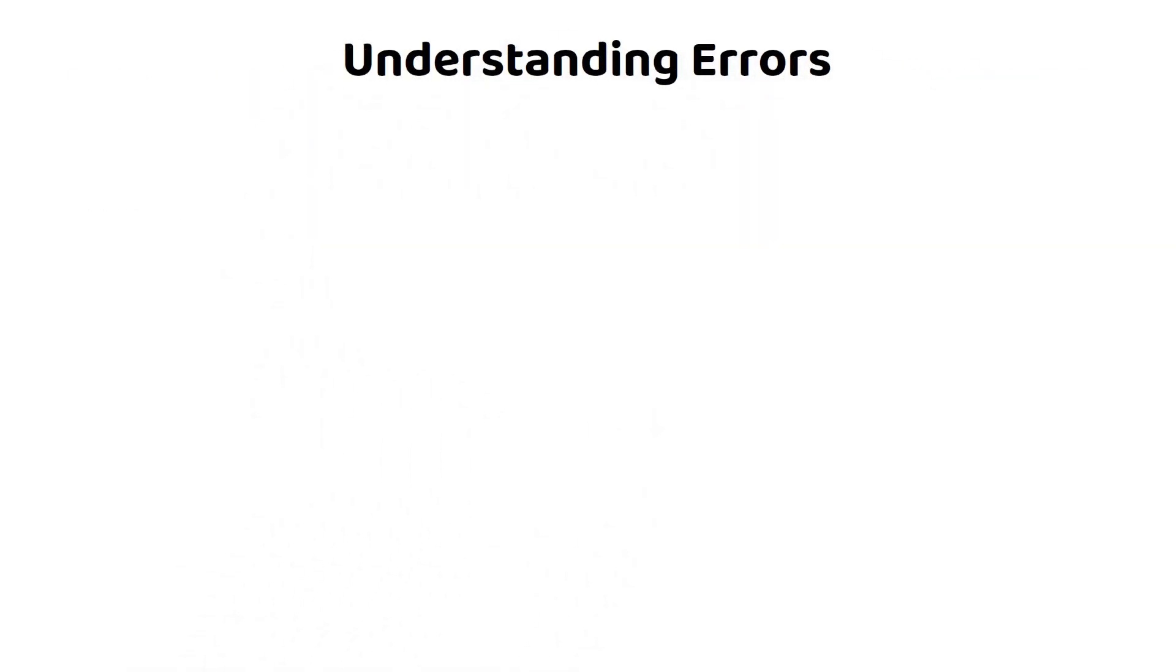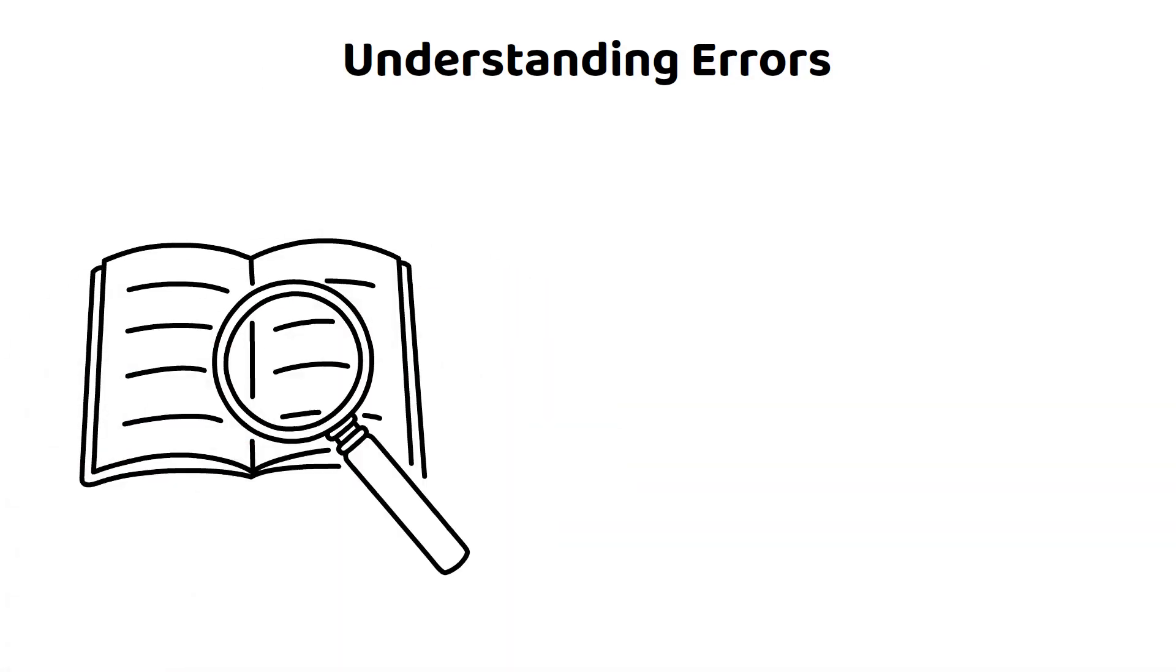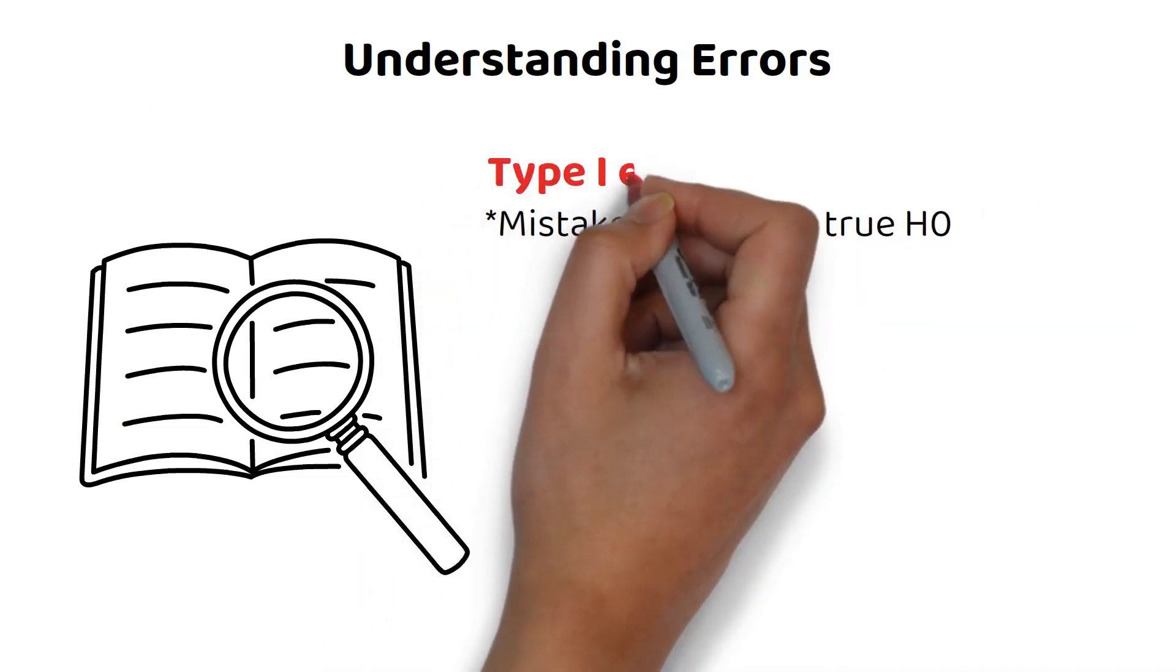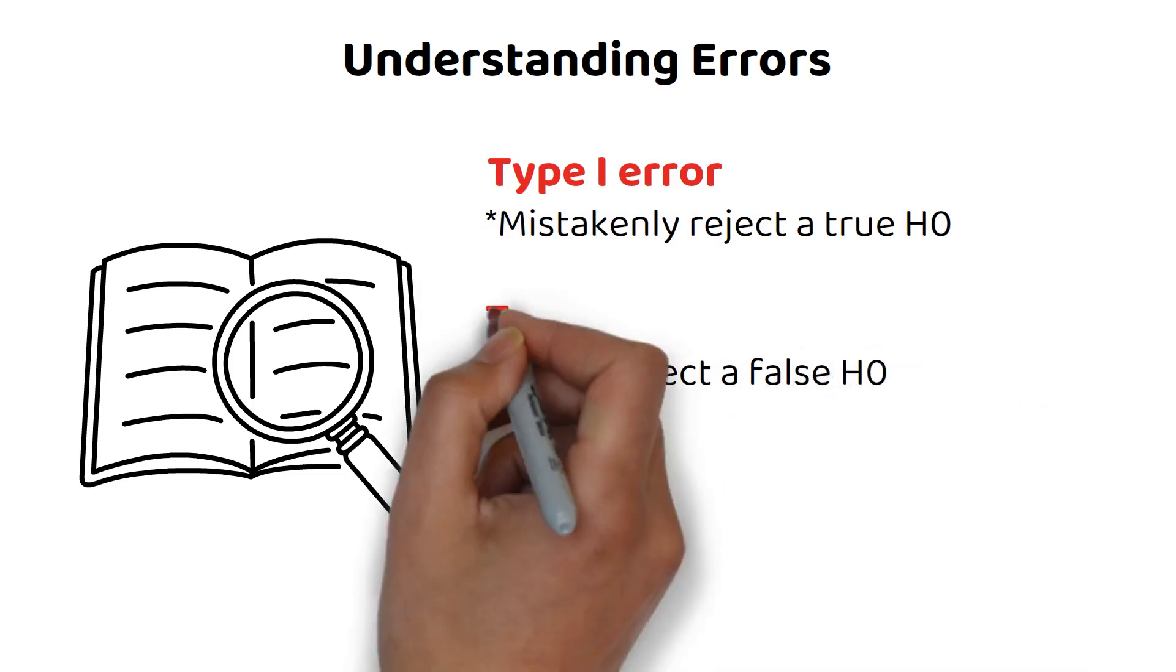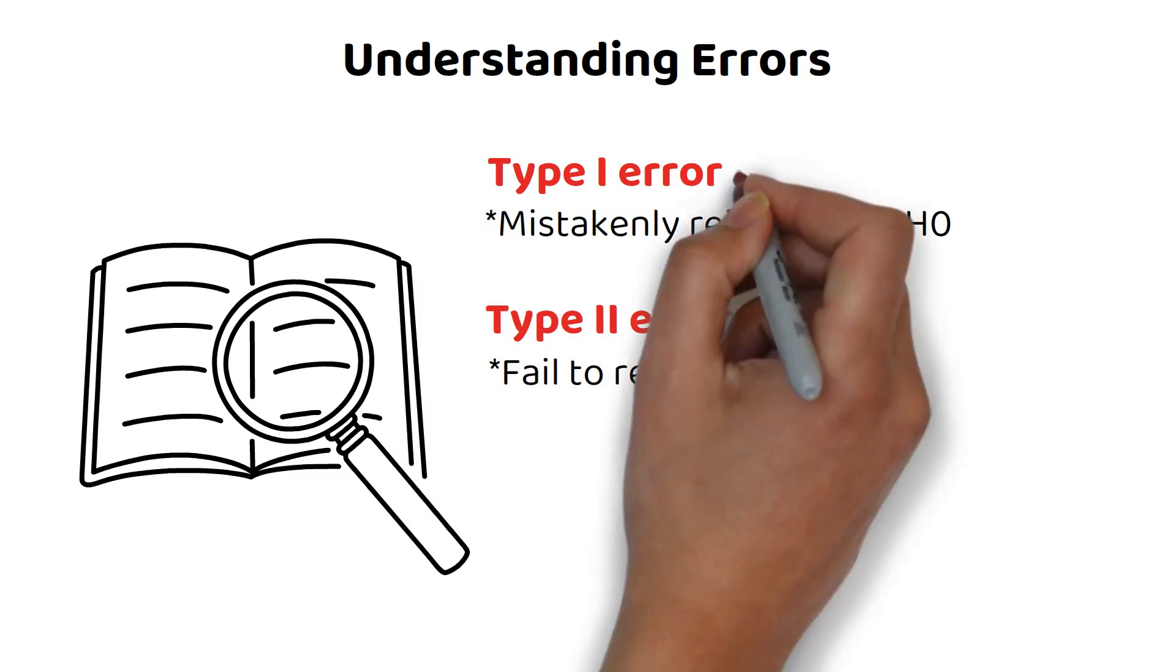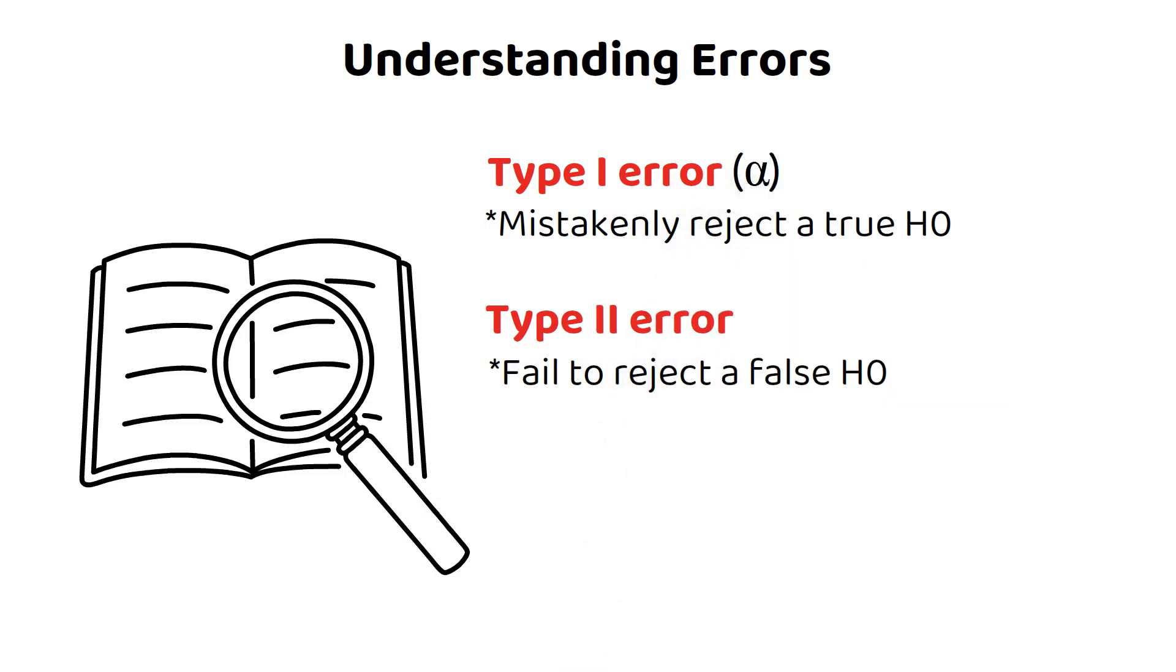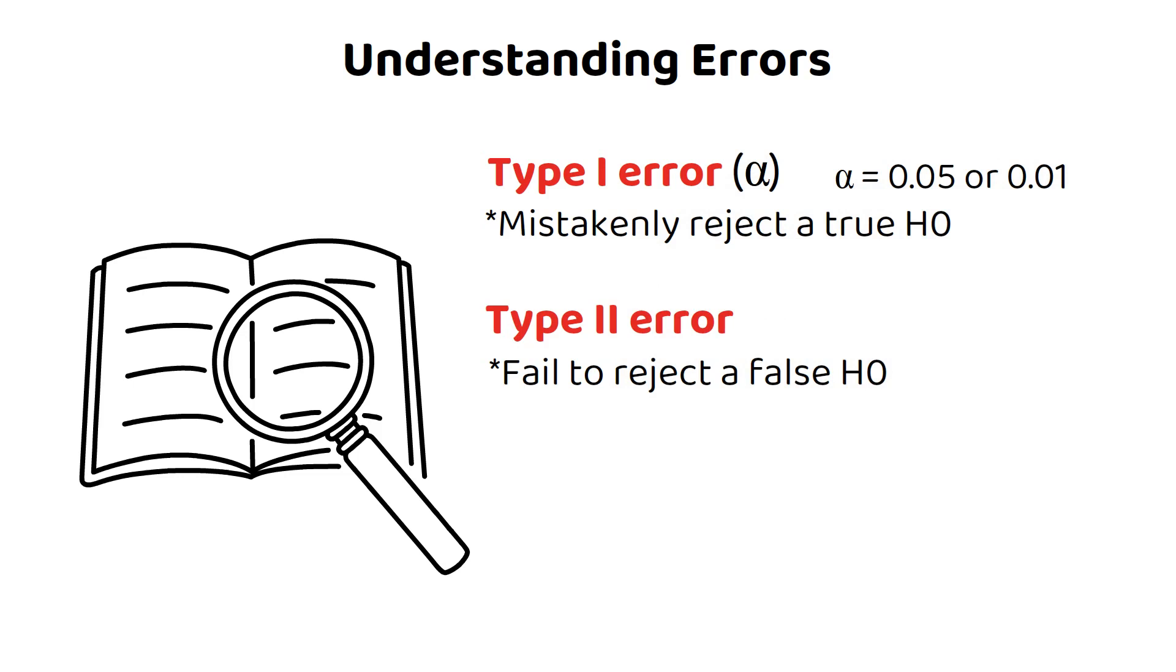Understanding Errors: Every hypothesis test comes with the possibility of making mistakes. We can either mistakenly reject a true null hypothesis, which is a type 1 error, or we can fail to reject a false null hypothesis, which is a type 2 error. The probability of committing a type 1 error is denoted by alpha, often called the level of significance. Commonly used values for alpha are 0.05 or 0.01, indicating a 5% or 1% chance, respectively, of committing a type 1 error.